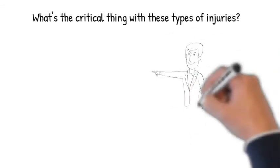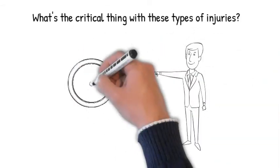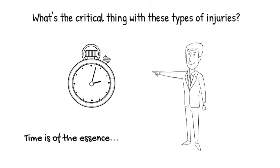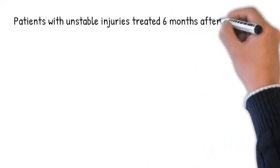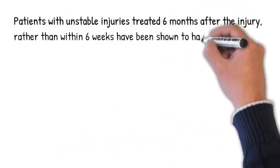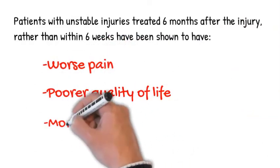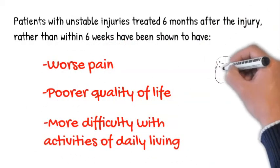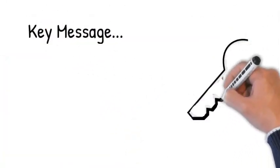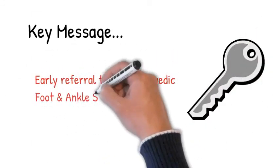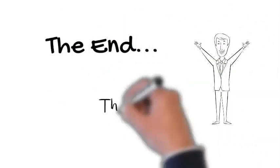What's the critical thing with these type of injuries? Not all of them need surgery, but time is of the essence. They need to be picked up early and sorted out early. The reason for that is that there is a study that's been out recently that shows that if you treat these injuries with surgery after 6 months, they do far worse than if you treat them within 6 weeks. If you treat them after 6 months, they're more likely to have pain, they're more likely to have a poorer quality of life, and they're more likely to have difficulty with activities of daily living. The key message is that you need an early referral to an orthopedic foot and ankle surgeon if you're suspicious of this injury.